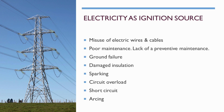All machines need to undergo preventive maintenance (PM) periodically as defined by the machine manufacturer or supplier. Failing to do so will cause the machine or wire to malfunction. Other electricity-related ignition sources include ground failure, damaged insulation, sparking, circuit overloading, short circuit, and arcing.